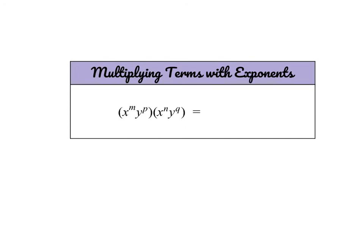Before we start multiplying polynomials, I want to do a quick review on how to multiply terms with exponents. Anytime you're multiplying terms with exponents, you're simply going to be adding up the powers for the bases that are the same. So here I have x to the power of m and x to the power of n — they both have base x, so we simply add up the exponents to get x to the m plus n. Same for y to the p times y to the q — that gives y to the p plus q.